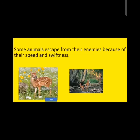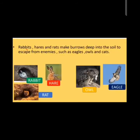Some animals escape from their enemies because of their speed and swiftness — deer can run very fast to protect themselves. Rabbits, hares, and rats make burrows deep into the soil to escape from enemies such as eagles, owls, and cats, since these smaller animals serve as food for those predators.